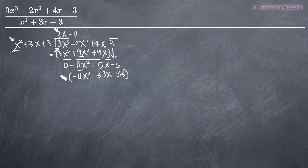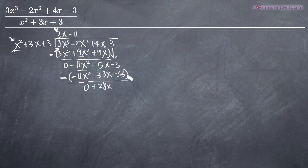We put this in parentheses and subtract. -11x² cancels with the -11x² above because of the double negative. We get -5x + 33x, which equals positive 28x. Then -3 minus -33 becomes -3 + 33, giving us positive 30.